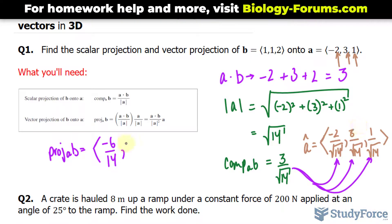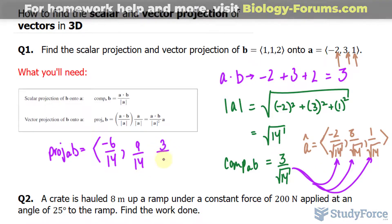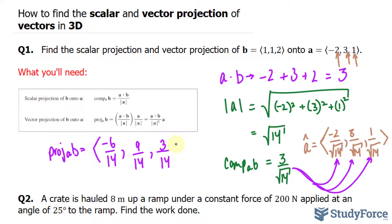3 times 3 is 9, over 14, and 3 times 1, that's 3, over 14. Now, of course, you can reduce these where they can be reduced. For example, negative 6 over 14 can be reduced down to negative 3 over 7. I'll do that right now. And that right there represents our final answer.